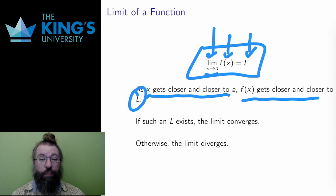It's about input and output. As the input is moving, the output of the function is also moving. As the input gets closer and closer to some fixed value a, I can ask what the output is doing. If the output is also getting closer and closer to something, that number is the limit.